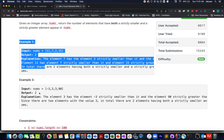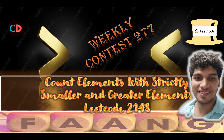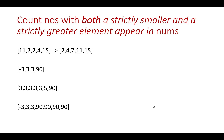I'll tell you two approaches to solve this question, so watch this video till the end. Let's get started with the slideshow. LeetCode 2148 — the question is quite self-explanatory. In the first example, we are given elements 11, 7, 2, 4, 15. For better understanding, let's sort them: the sorted list is 2, 4, 7, 11, 15.